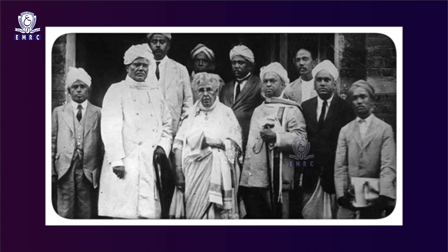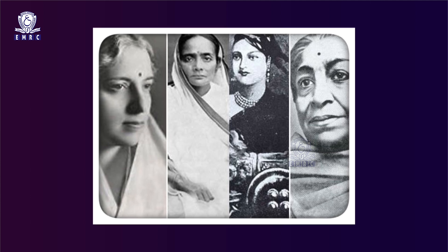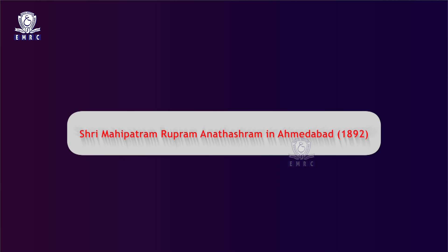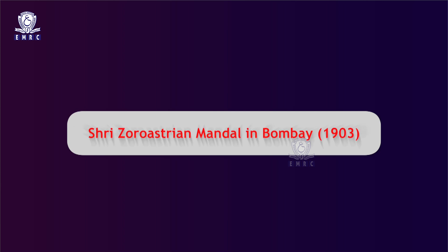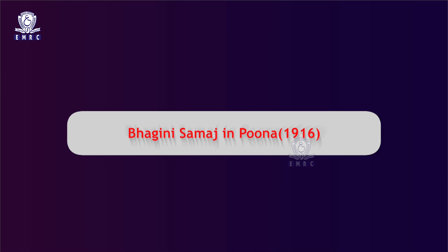The period from 1911 to 1918 is of great significance in the history of the Indian national movement because for the first time a woman, Annie Besant, led the national movement as president of the Indian National Congress. The setting up of the Home Rule League and the organization of the Home Rule agitation raised the tempo of the movement. The important achievement of the women's movement in India during this phase was the founding of the Women's Indian Association (WIA), Pandita Ramabai's Sharda Sadan in 1892 in Pune, Shri Mahipatram Ruparam Anantashram in Ahmedabad in 1892, Shri Zoroastrian Mandal in Bombay in 1903, Maternity and Child Welfare League in Baroda in 1914, and Bhagini Samaj in Pune in 1916.